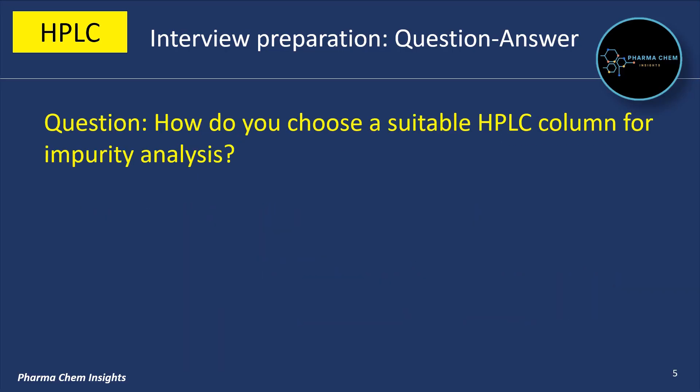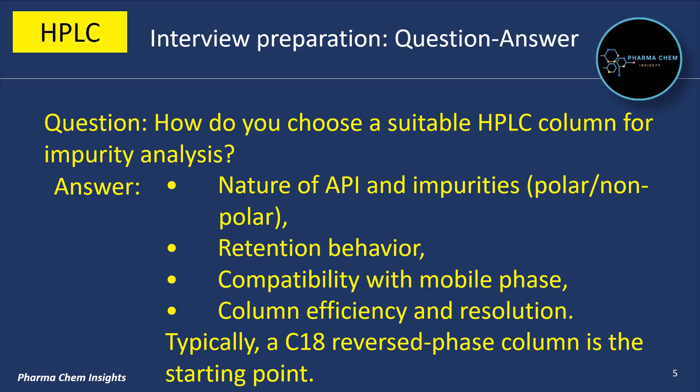Next question: how do you choose a suitable HPLC column for impurity analysis? A suitable HPLC column is selected based on the nature of the API and impurities (polar/non-polar retention behavior), compatibility with mobile phase, column efficiency and resolution. Typically, a C18 reverse phase column is the starting point in impurity analysis.